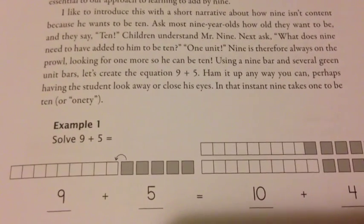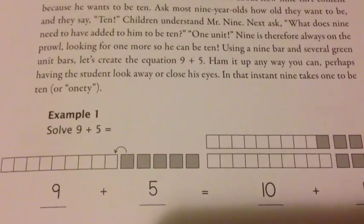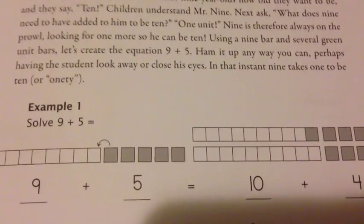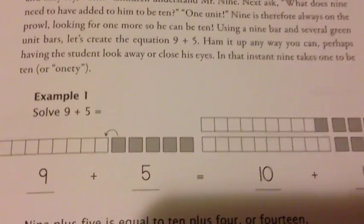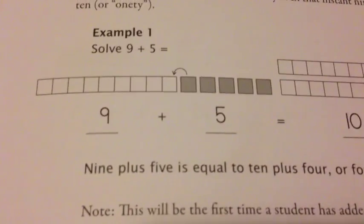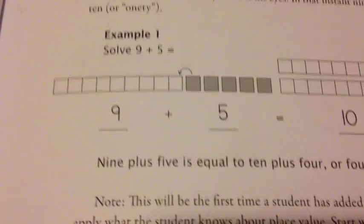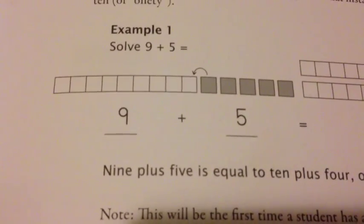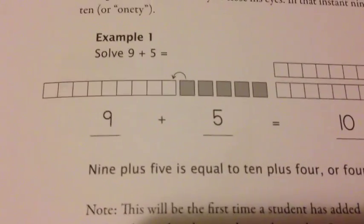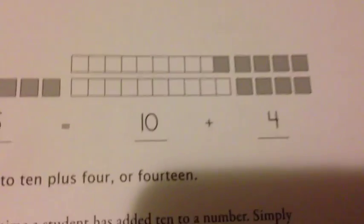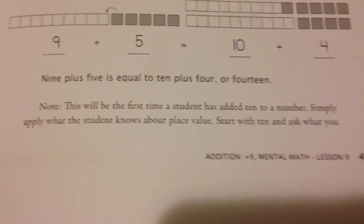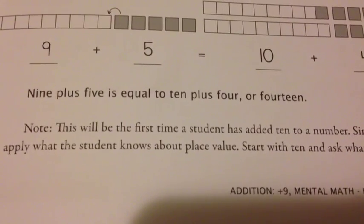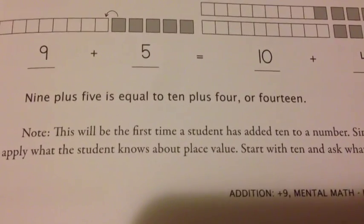Ham it up any way you can — perhaps having the student look away and close his eyes. In that instant, 9 takes 1 to be 10. Then it gives the example of 9 plus 5. You'll see that they have 9 of the white units and then there are 5 shaded. They take away 1, which will then make it 10, and then what's remaining is 4. So then you end up with your answer: 9 plus 5 is equal to 10 plus 4, or 14.